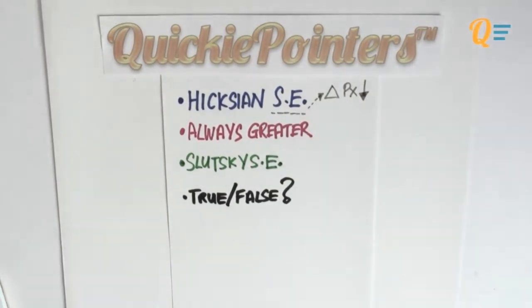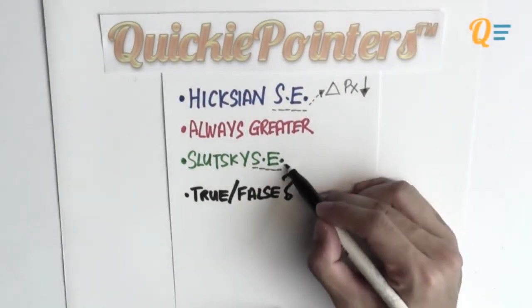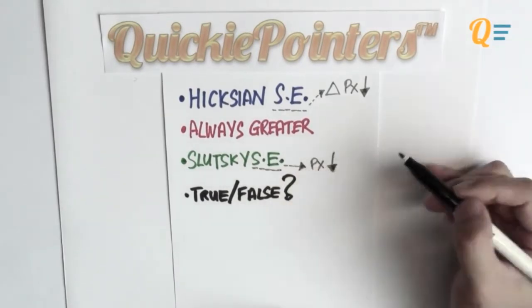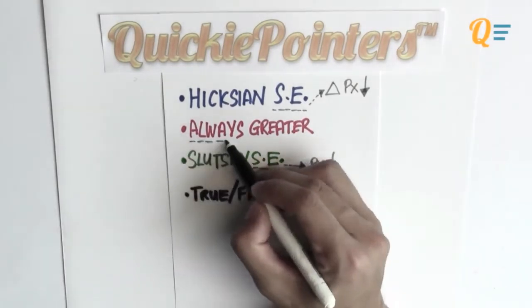And this of course applies to the Slutsky SE as well. If I want to find the Slutsky SE, I'm also going to have to change the price of X but I'm going to make sure that I decrease the price so that it will be in line with whatever I'm coming up with for the Hicksian SE.